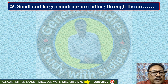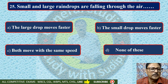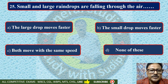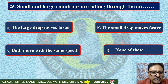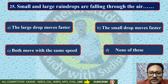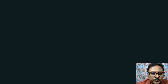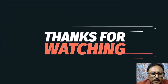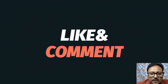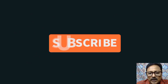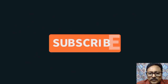Small and large raindrops are falling through the air. Does the large drop move faster, the small drop move faster, or both move with the same speed? Both move with the same speed. Thank you all for watching this video. Please like, comment, subscribe and press the bell icon.